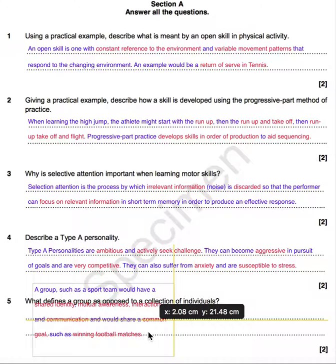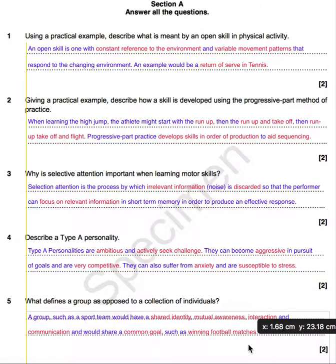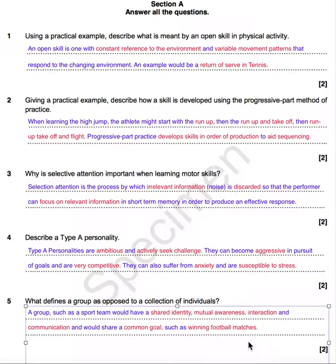Question five: what defines a group as opposed to just a collection of individuals? Again, we need at least two characteristics of the group. A group such as a sports team would have a shared identity, mutual awareness, interaction and communication between members, and they would share a common goal. I've included a practical example — such as winning football matches — to help illustrate the answer and secure the marker's belief in my understanding.